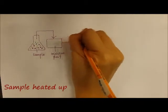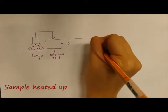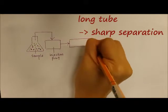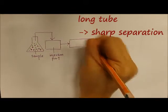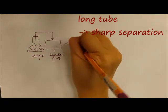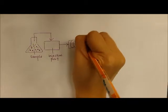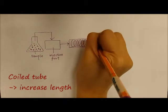The sample will then be heated up when passing through the tube. The length of the tube should be as long as possible to allow sharp separation of the components in the sample, and so the tube is coiled up to increase its length.